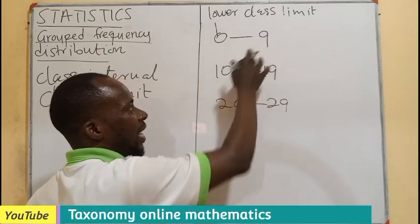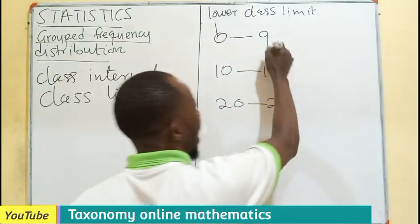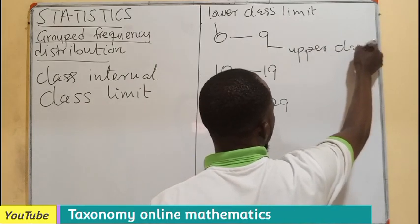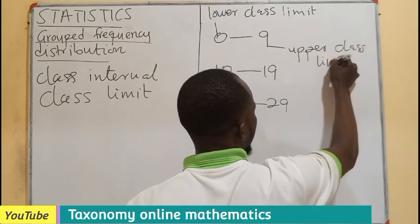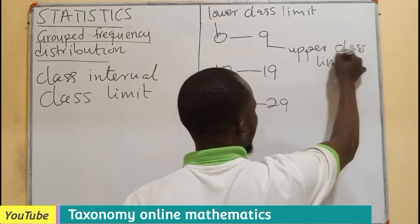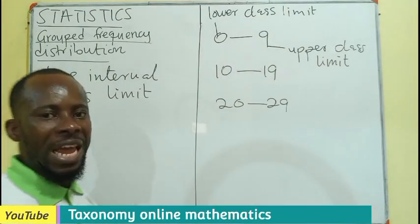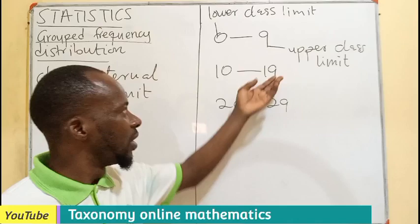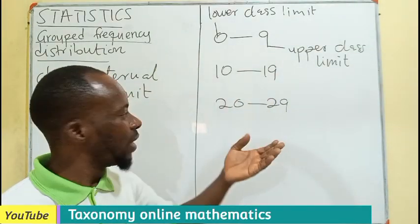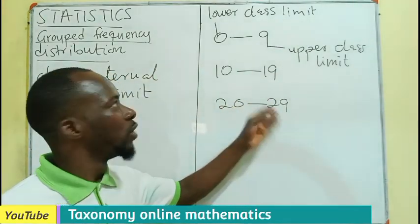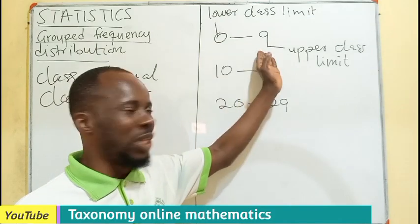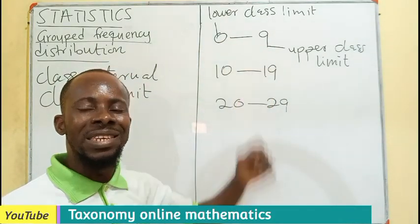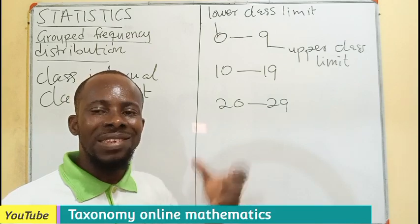The end point on the right becomes the upper class limit. So this applies similarly: in the interval 10 to 19, 10 is the lower class limit and 19 is the upper class limit. This range of numbers from 0 to 9 is what determines the class interval.